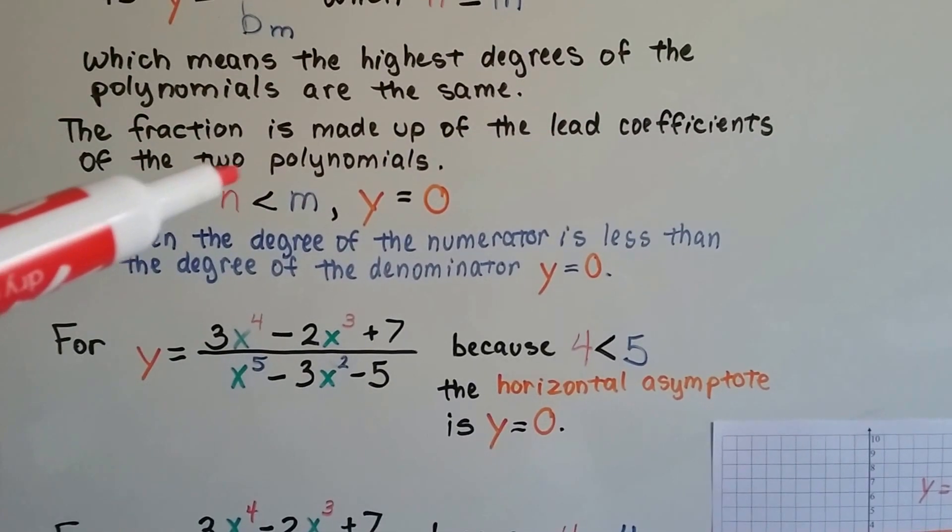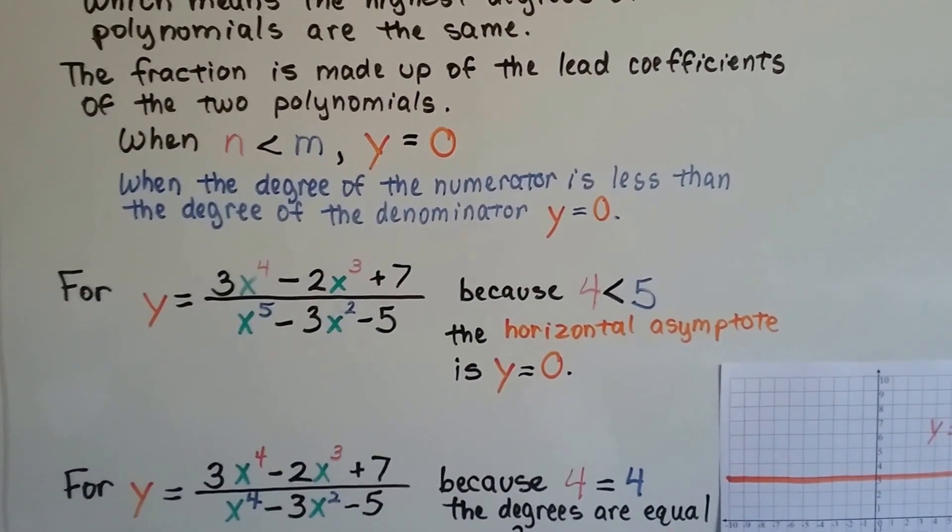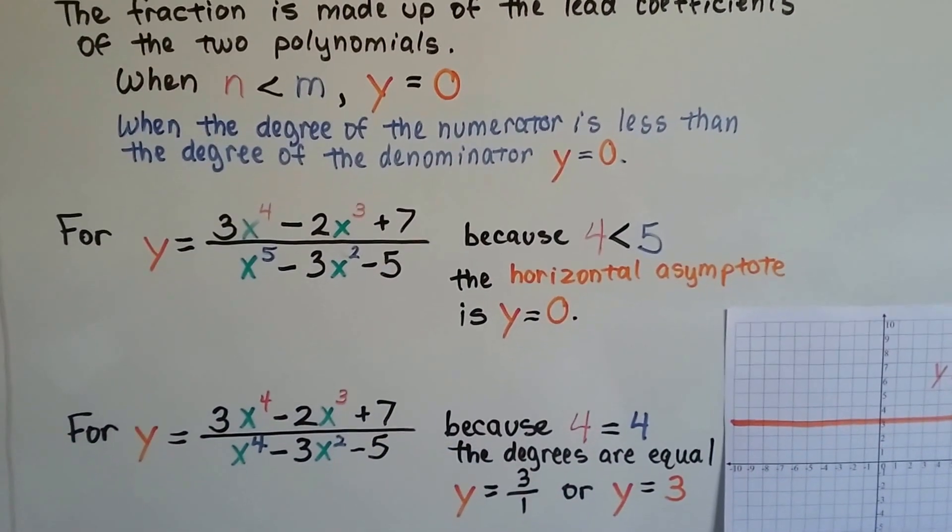When n is less than m, then the y is going to equal 0. That's when the degree of the numerator is less than the degree of the denominator, y equals 0.